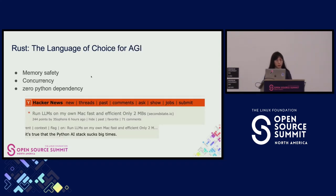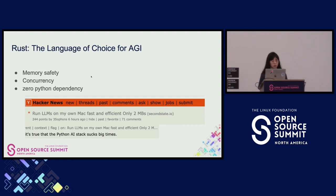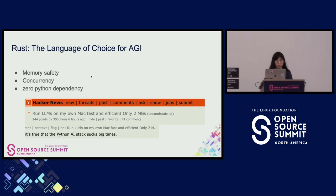We would argue that Rust is the language of choice for AI or AGI because of its very good performance, memory safety, and concurrency features. We wrote an article posted on Hacker News showing our way of running large language models on Mac and across devices with a very tiny Wasm file that's only two megabytes. One commenter noted that the Python AI stack can be a big headache.